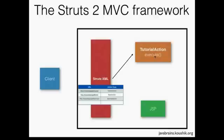Now this execute method completes. We have implemented a sysout in our execute method, but that's not really the ideal way in which a web application communicates to an end user. The end user, the client, would like to see HTML. And the way to see HTML is by rendering a JSP. We are using JSP for the view, so a client would like to see a rendered JSP as an end result of the request.